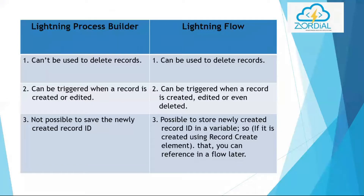What is the difference between Lightning Process Builder and Lightning Flow? In Process Builder, you cannot delete a record, but in Lightning Flow you can. Process Builder can be triggered when a record is created or edited, while a flow can be triggered when a record is created, edited, or even deleted. In Process Builder it is not possible to save a newly created record ID, but in Flow it is possible to store a newly created record ID in a variable, which can be referenced in the flow later.